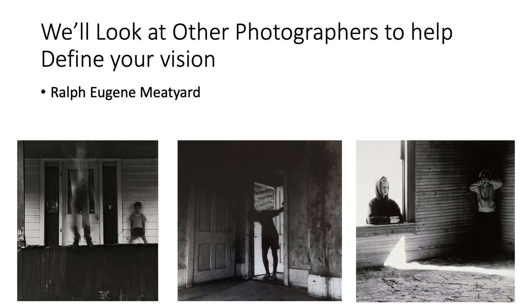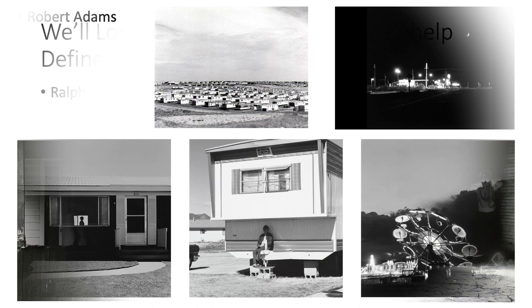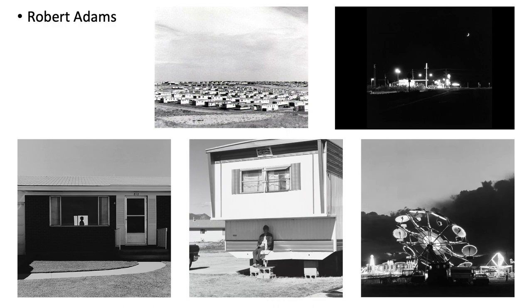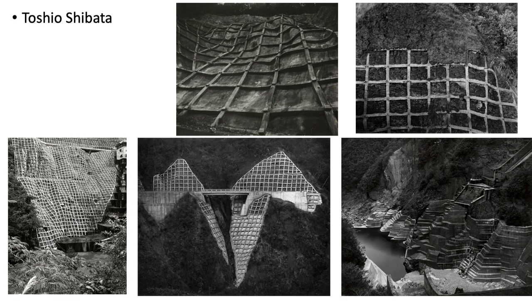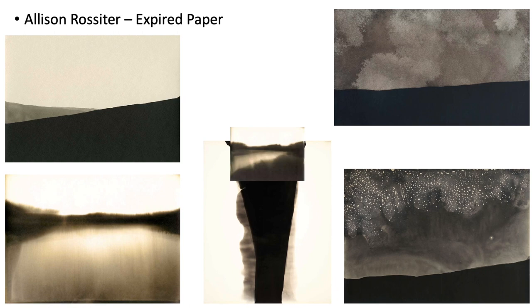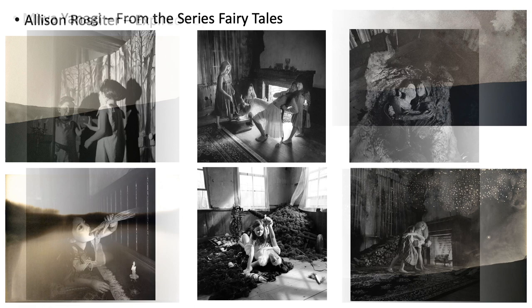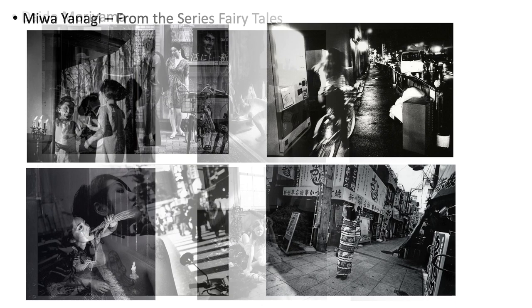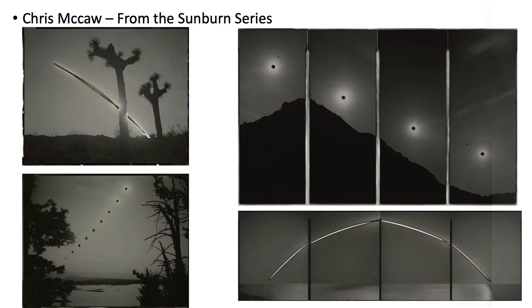We'll look at other photographers as well to help you define your vision, such as Ralph Eugene Meatyard, Robert Adams, Toshio Shibata, Allison Roysitter and her expired paper techniques, Miwa Yanagi from the fairytale series, Teido Morayama, Chris McCaw from the sunburn series, and Graciela Iturbide.